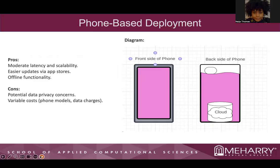For the phone-based deployment, the pros include moderate latency and scalability, easier updates, and offline functionality. The cons include potential data privacy concerns, as well as variable costs depending on the phone models and data charges. The diagram on the right shows the front and back of the phone, and within that phone we can also incorporate cloud-based processing.